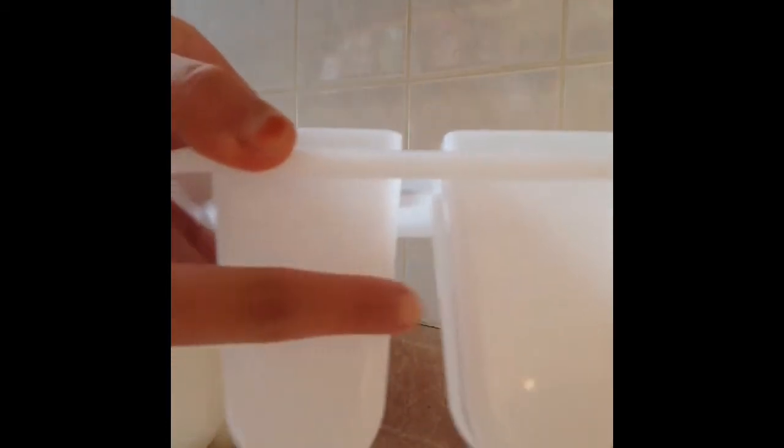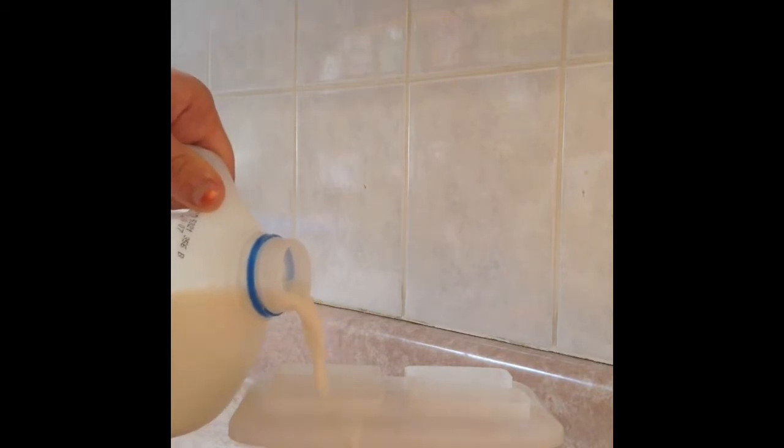The first step is to get your milk. I'm going to be using 2% milk, but you can use any type you want. And you're going to fill halfway up to the little popsicle holder. And you can fill them all up, or you can just fill one. I'm going to be filling just the first one up.